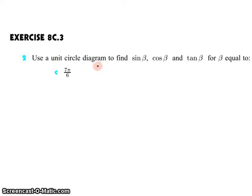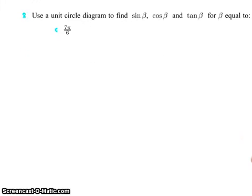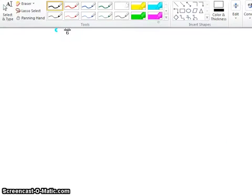We're told to use a unit circle diagram to find the vertical component, horizontal component, and slope for the angle beta. Don't be confused by all these betas — beta is just representing an angle. The angle in this case is 7π/6. So if we want to find sine, cosine, and tangent for 7π/6 using the unit circle, probably the first thing we should do is draw a unit circle.